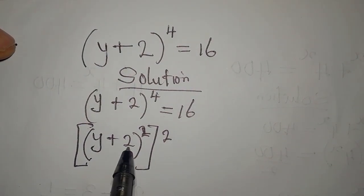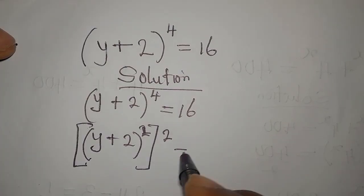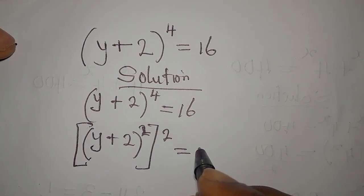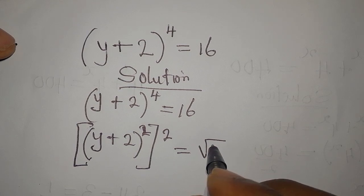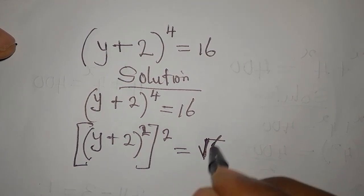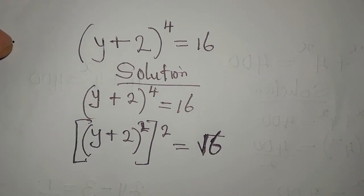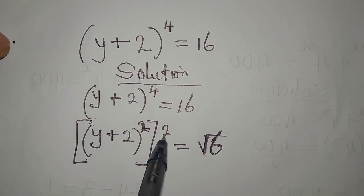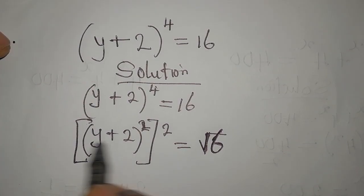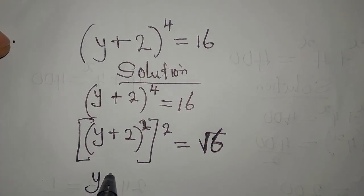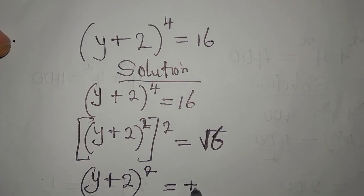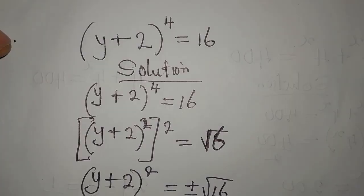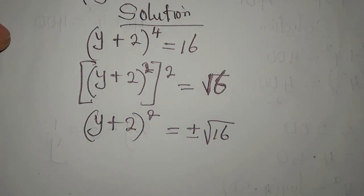Because if you open this bracket you're going to have the original expression back, and this is equal to 16. Now what we'll do is take the square root of both sides, so that we have just (y + 2) to the power of 2 equal to plus or minus the square root of 16.